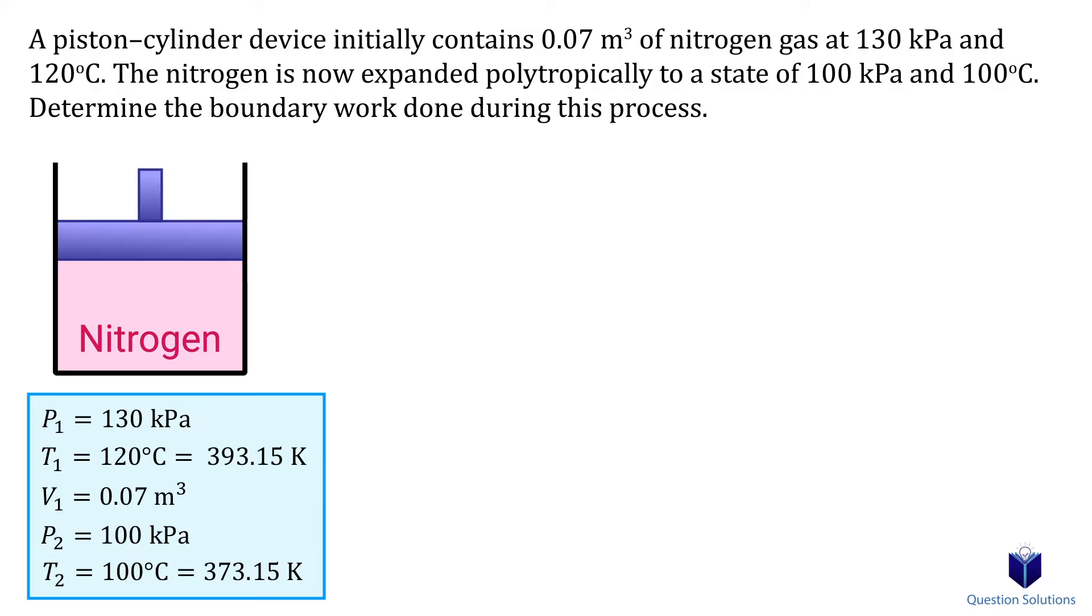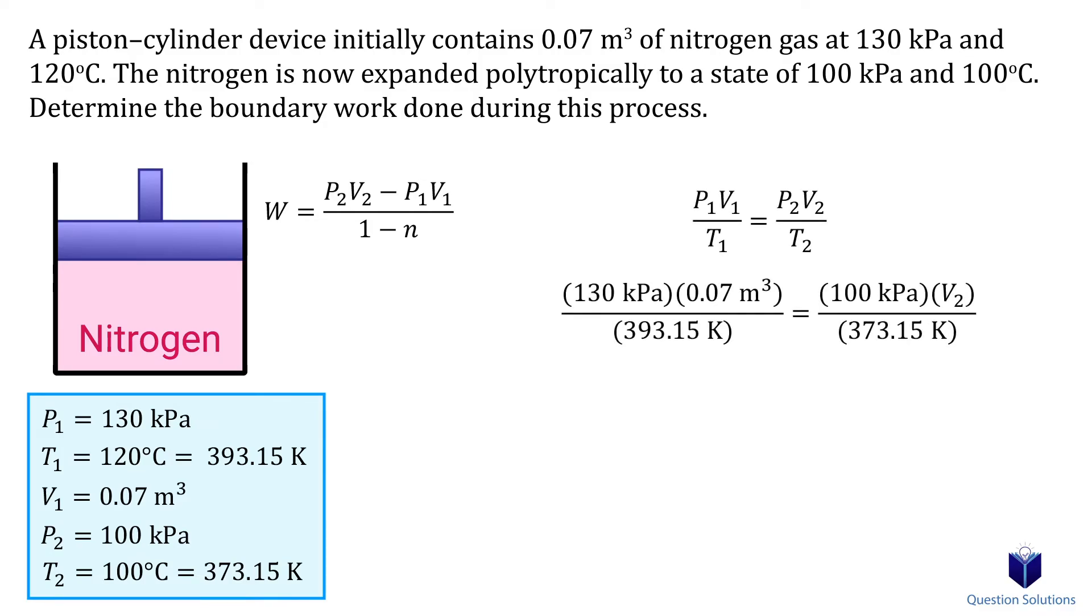Now let's write down the equation for work done during a polytropic process. Looking at the equation, we need to figure out two unknown values. The second state volume and the n constant. To figure out the second state volume, we need to use the ideal gas equation that compares two states. Let's plug in the values we have. Now we can solve for the final volume.